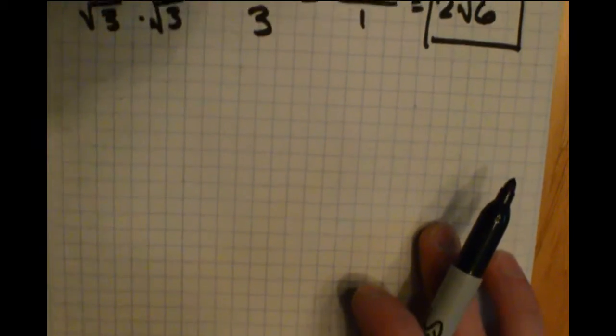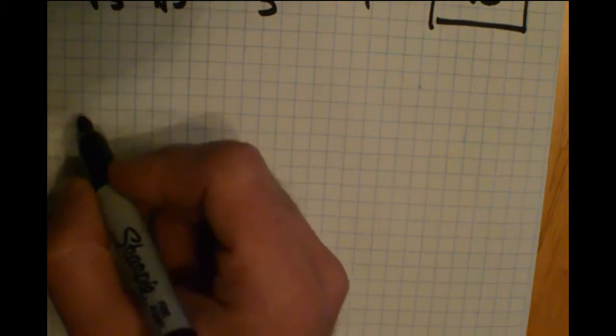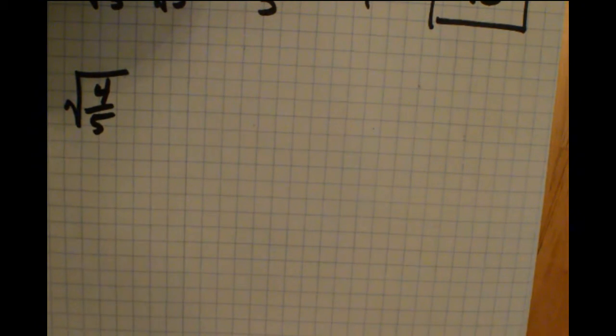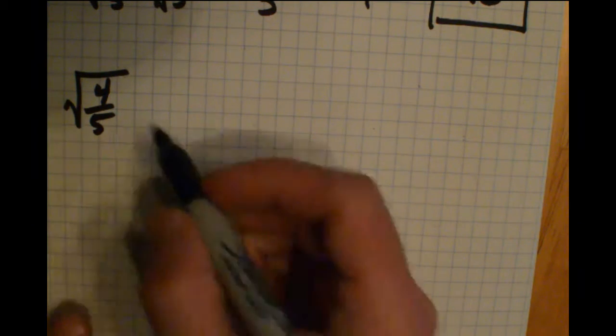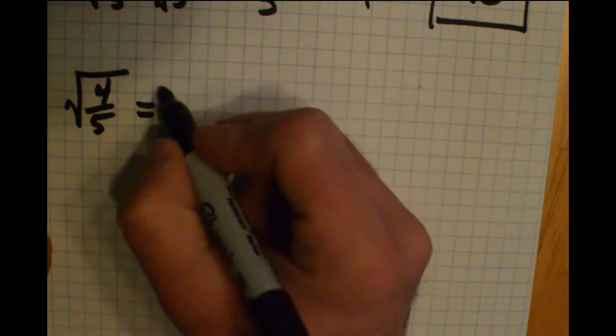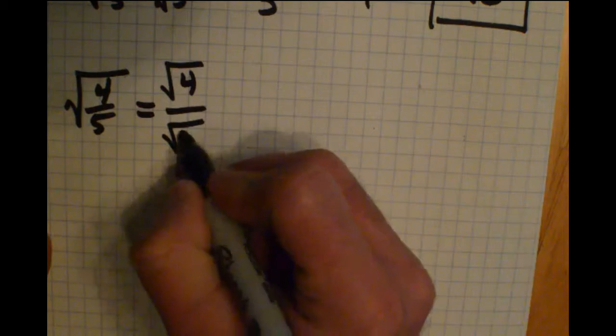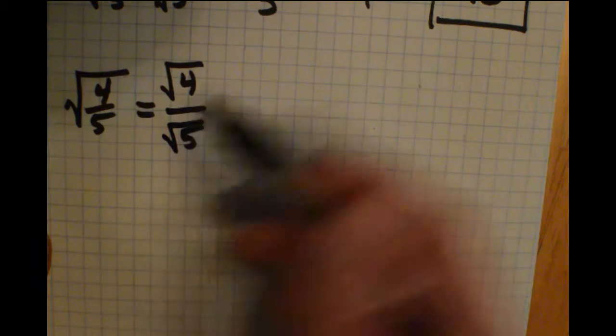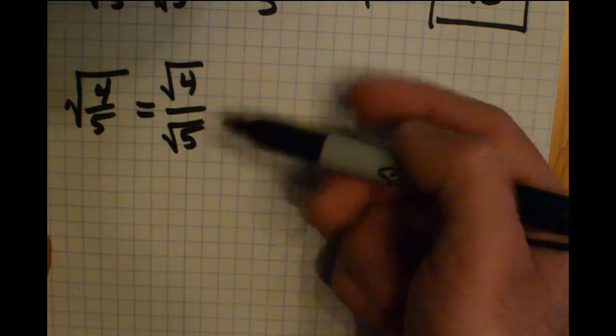Let's take a look at when you have a fraction inside of a radical. So let's say we have the radical of 4 fifths. Well, just like we saw with multiplication going on in a radical, you can split that up into two. It works the same for division. When you have a fraction under a radical, what you can do is split that up as two different radicals being divided. So radical 4 over 5 is exactly the same thing as radical 4 over radical 5.